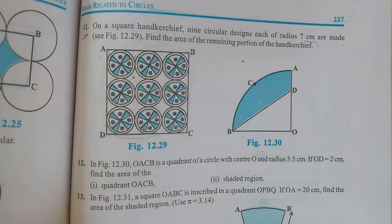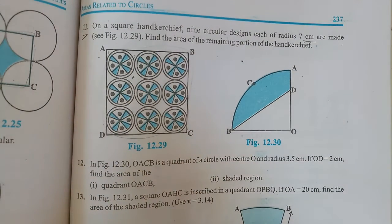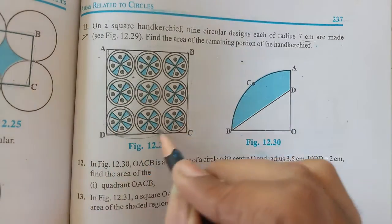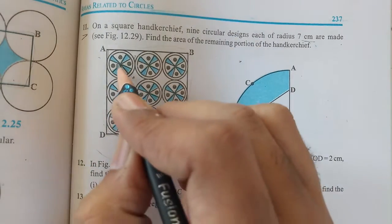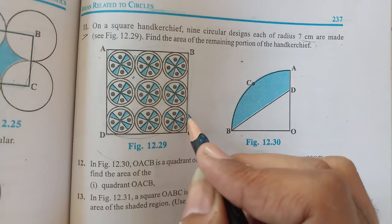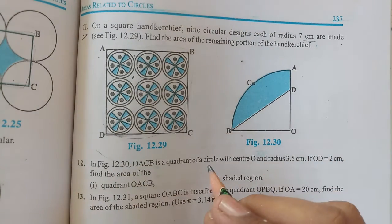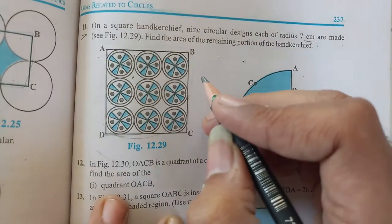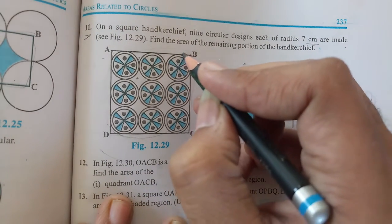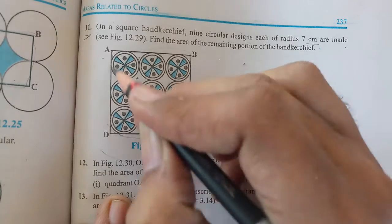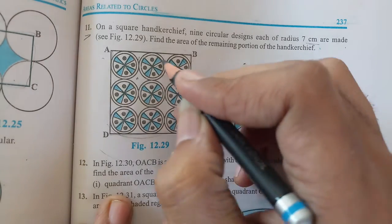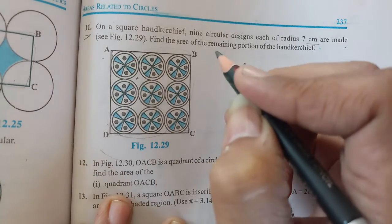It's very simple - we need to find the area of the square, then find the area of nine circles, and subtract them. What remains will be the white portion's area. For the circle, the radius is given, so if we find one circle's area and multiply by nine, we get the total area of all circles.